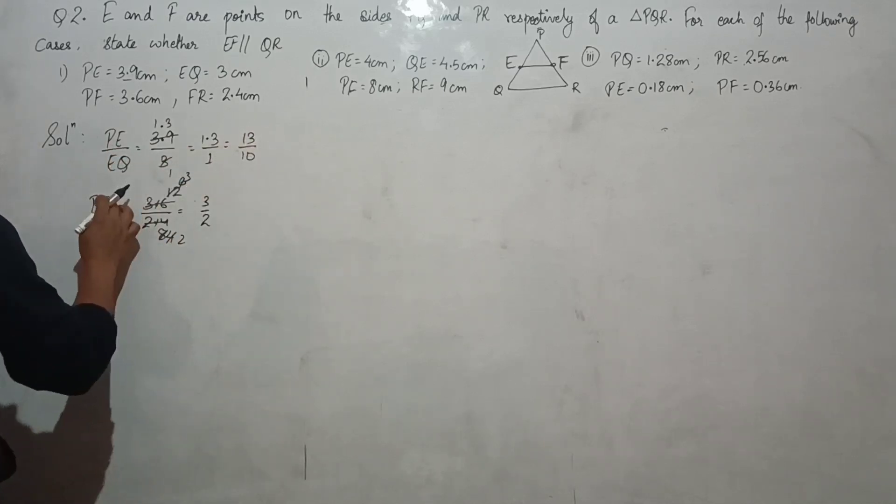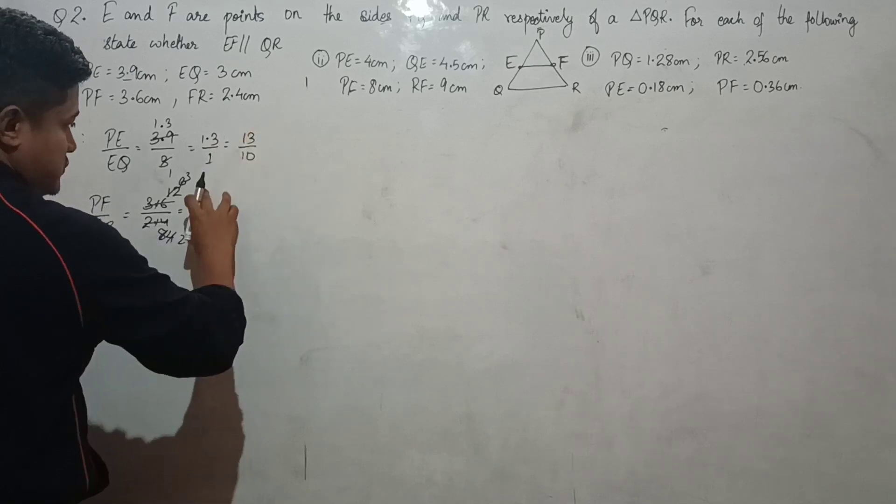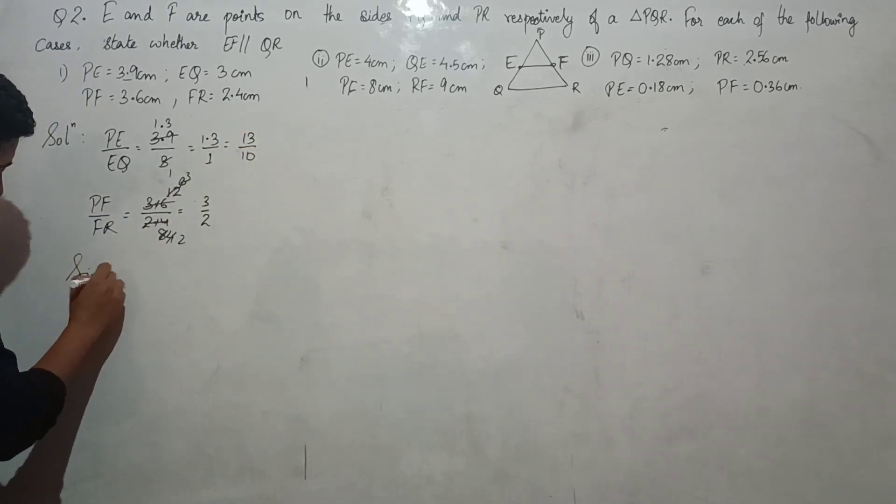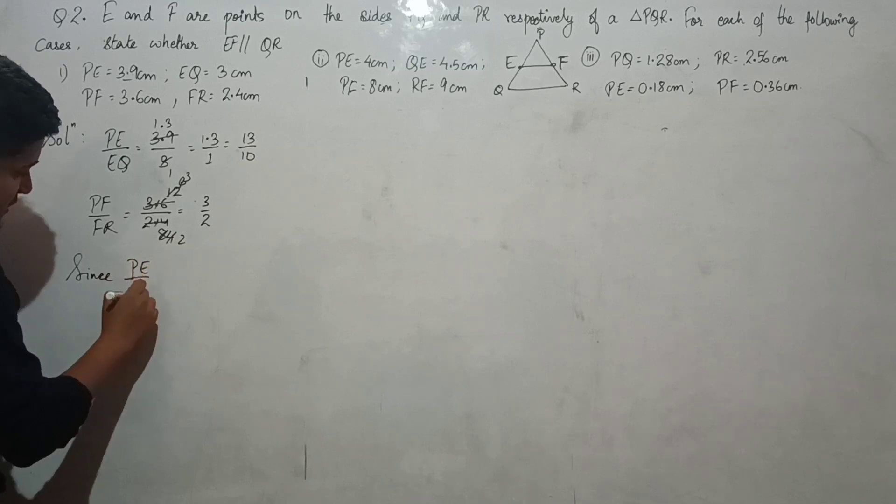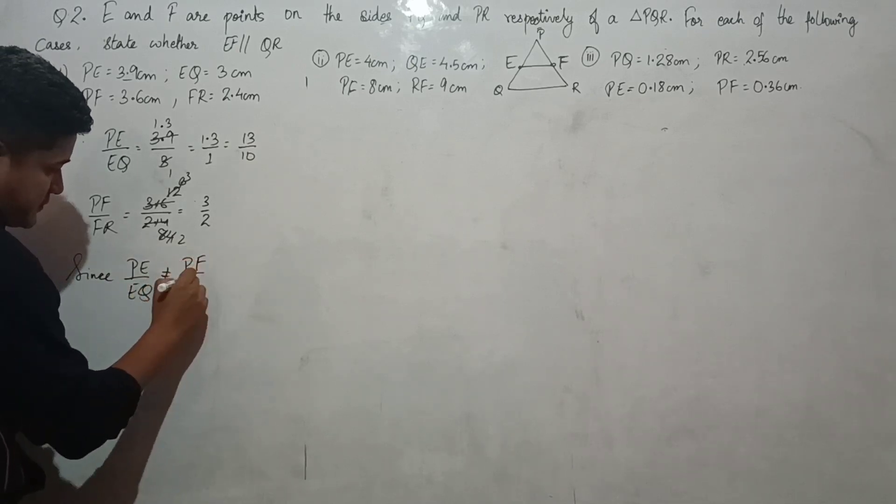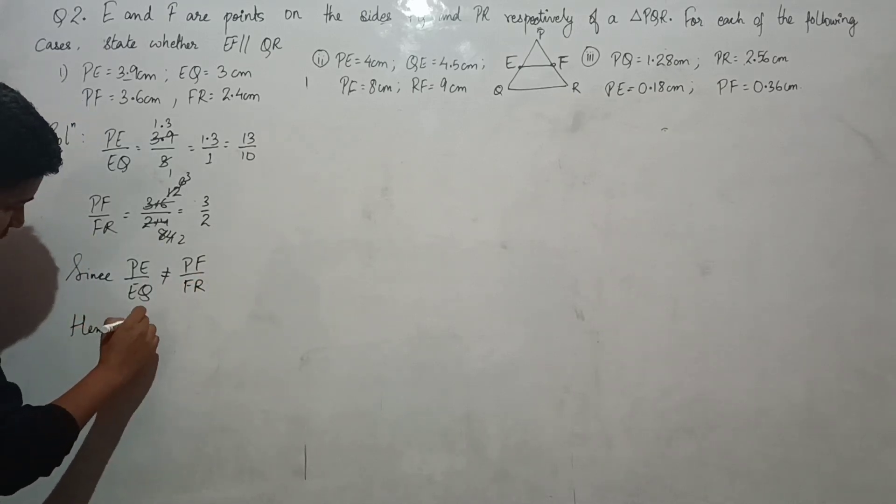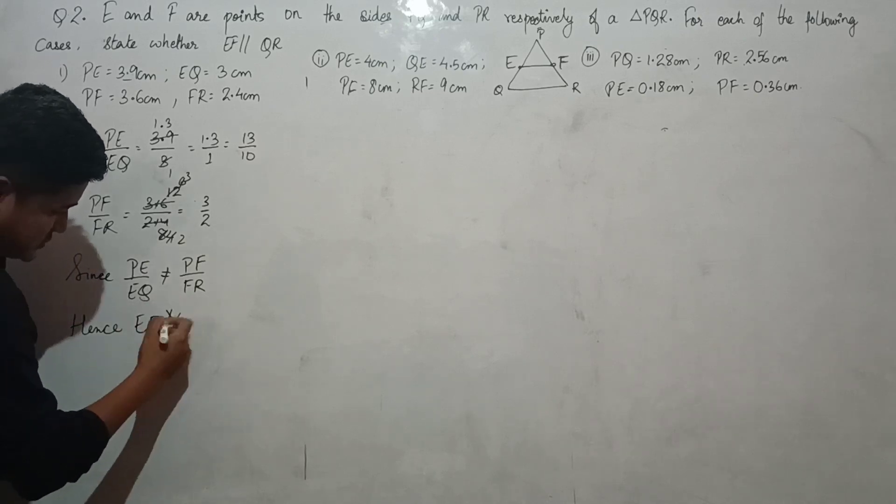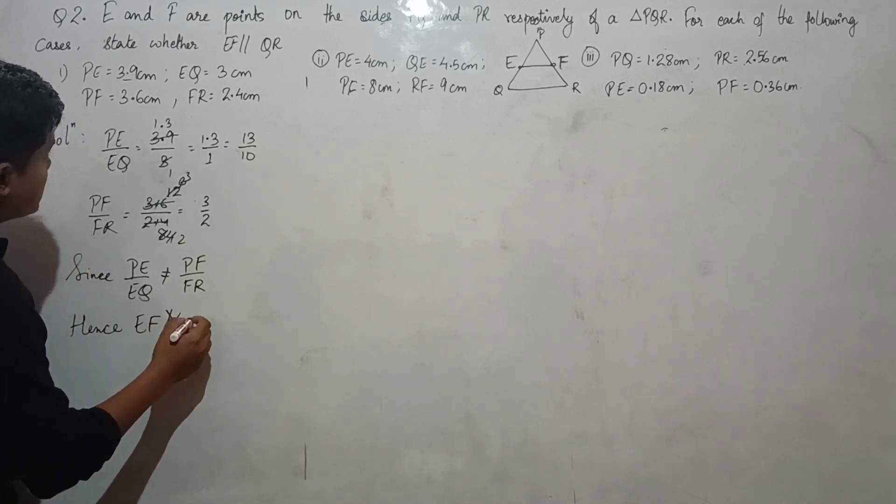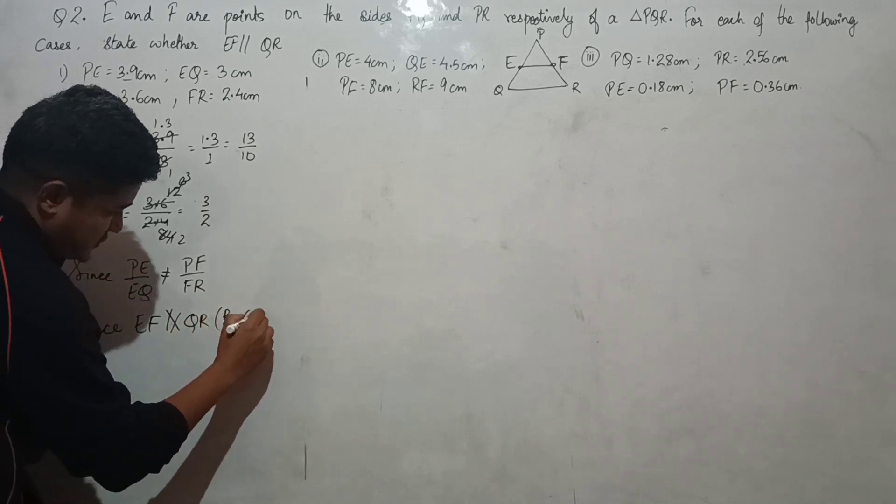Since PE/EQ equals 13/10 and PF/FR equals 3/2, PE/EQ is not proportional to PF/FR. Hence, EF is not parallel to QR by the converse of Basic Proportionality Theorem.